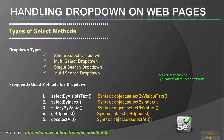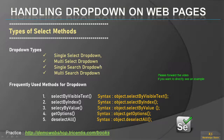Hello everyone, welcome back to another session of Selenium training. In this session we are going to learn about how to handle dropdowns on web pages. There are different types of dropdowns: single select dropdown, multi select dropdown, single search dropdown, and multi search dropdown.